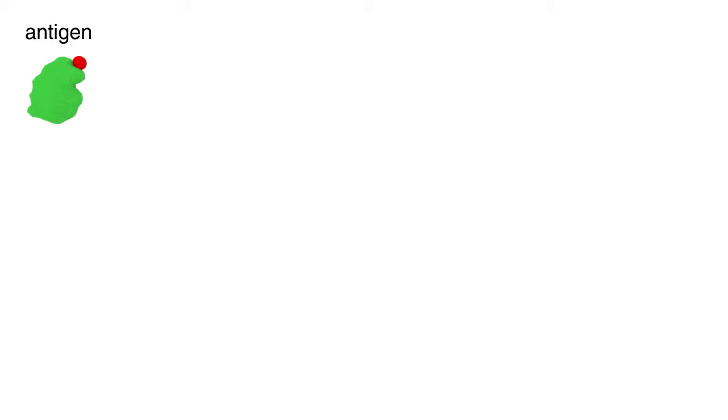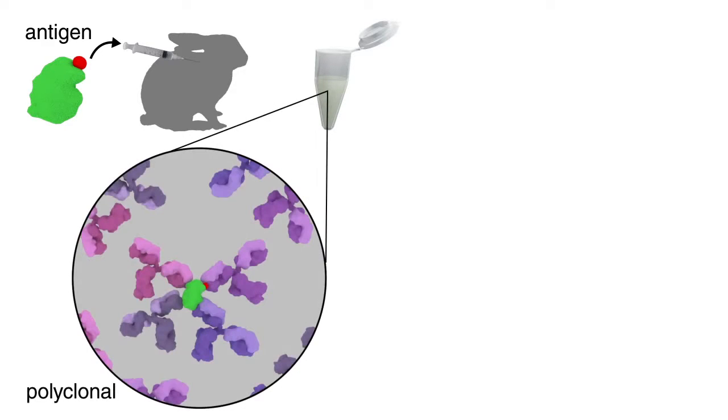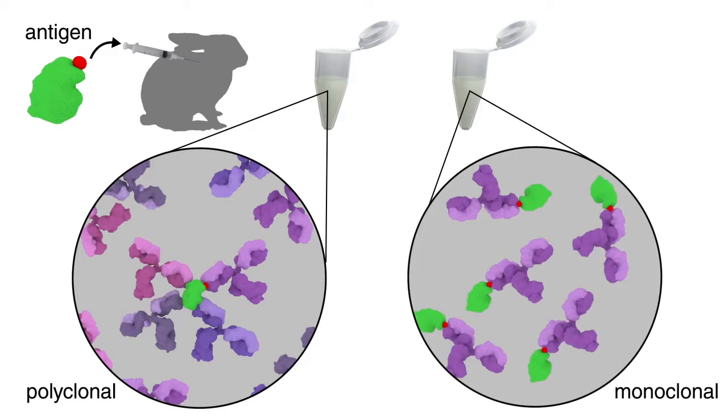To produce antibodies against an antigen of interest, researchers inject the antigen in question or a fragment of it into a mammal such as a rabbit, sheep, or goat. The resulting antibodies are isolated. A polyclonal antibody preparation contains a mixture of heterogeneous antibodies against multiple sites of the antigen. A monoclonal antibody preparation contains an antibody that recognizes only one site on the antigen.